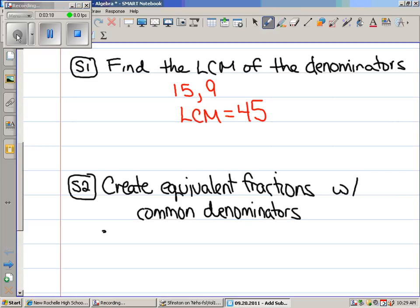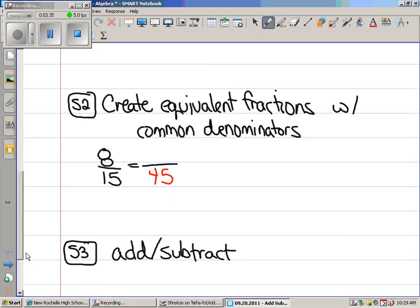Let's do this. We're going to create some equivalent fractions. Here's what I mean by creating equivalent fractions. Here was the original: 8 over 15. How could we get this to be something over 45? 15 times 3 is 45. So we've got to multiply the top by 3. What's 8 times 3? 24.